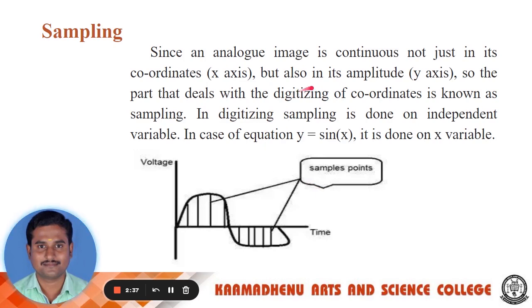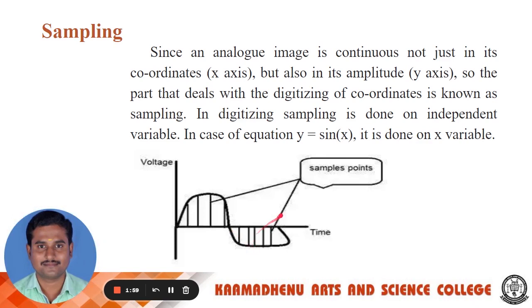Since an analog image is continuous, sampling is done on the x-axis, while quantization is done on the y-axis. The part that deals with digitizing coordinates is known as sampling. In digitizing, sampling is done on the independent variable — in the case of the equation y = sin(x), it is done on the x variable. The coordinate values are digitalized into sample points, with time on the x-axis and voltage on the y-axis.